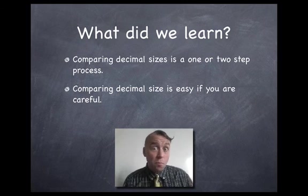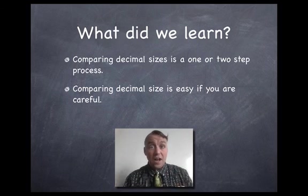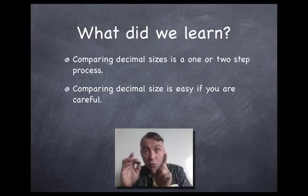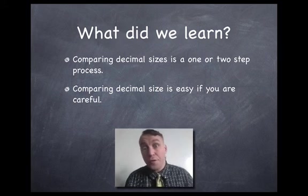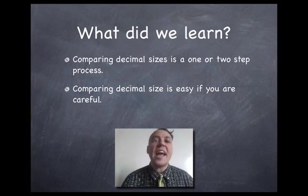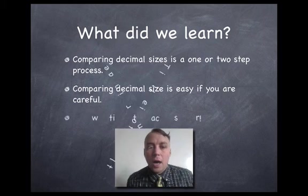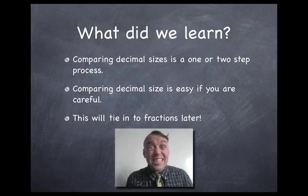Secondly, it's easy if you're careful. Now, if you start getting confused and start looking at the number and saying 'oh, which one has more digits, so that one must be bigger,' no, that's not always true. Follow the steps. Look at the place values one at a time. Check for whole numbers first. If you do that carefully, you will get the answer correct every single time.